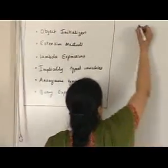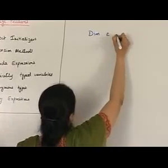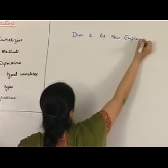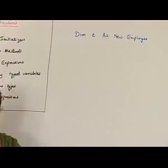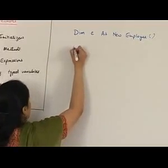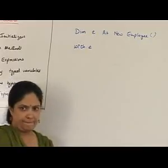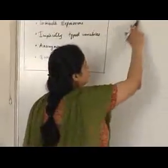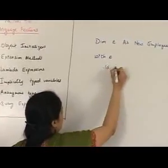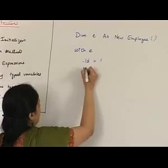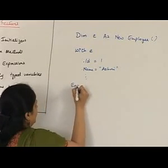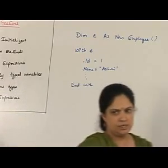VB always had a syntax where if you declare a variable of a type — for example, `Dim E As New Employee` — you could use a keyword called `With E`, where you could set multiple properties of that variable at the same time within one block. You'd say `With` the variable name, then `.Id = 1`, `.Name = whatever`, and so on, with `End With` at the end. This was already in VB.NET even before 9.0.